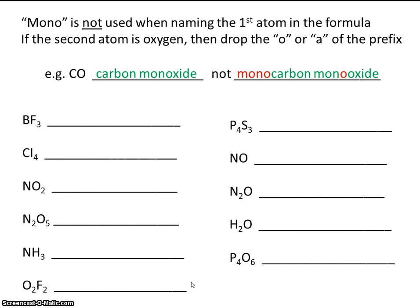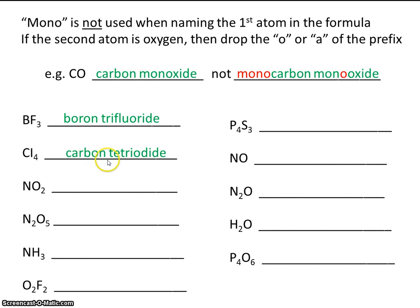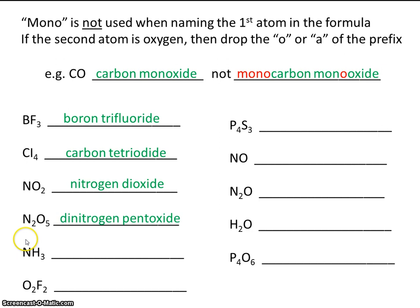Let's practice a few of these. This is boron with three fluorines, so boron trifluoride. This is carbon and four iodines, so carbon tetraiodide. Why don't you pause the video now and practice the rest on your own? This is nitrogen and two oxygens, so nitrogen dioxide. This is two nitrogens and five oxygens, so dinitrogen pentoxide.